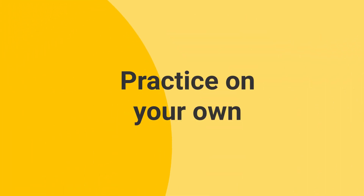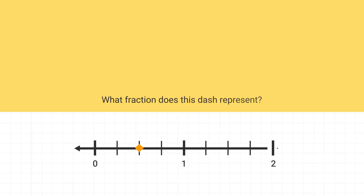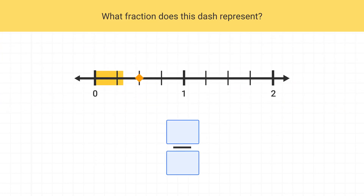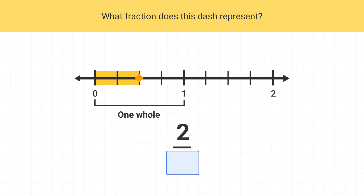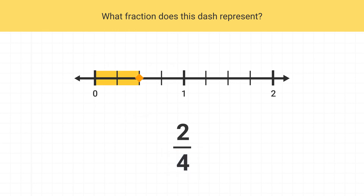Now it's time for you to practice on your own. What fraction does this dash represent? We can see that this dash contains two shaded pieces, so the numerator is two. Then we can look at one whole, and see it's split into four parts. The denominator is four, so this fraction represents two-fourths.